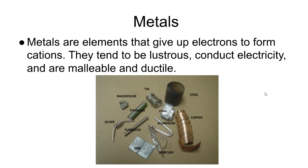Here is a dictionary definition of metals: metals are elements that give up electrons to form cations. They tend to be lustrous, conduct electricity, and are malleable and ductile. The first part identifies metals as a particular type of element, and then it talks about how those elements behave.